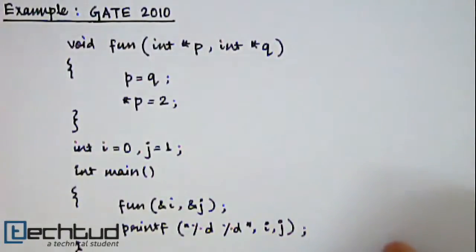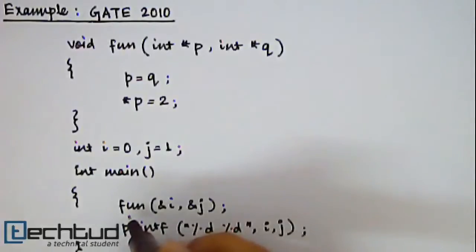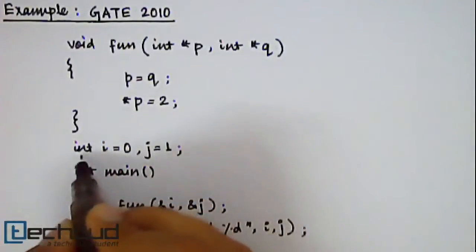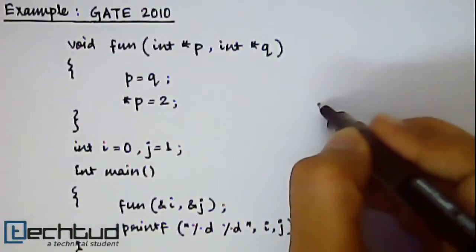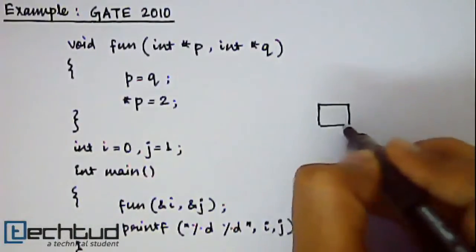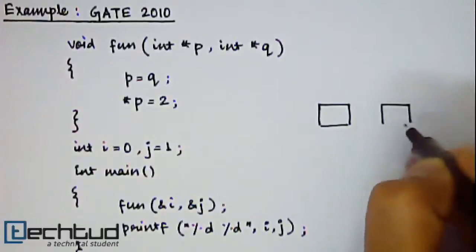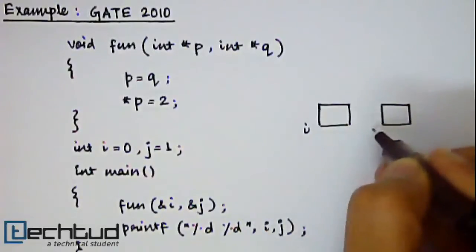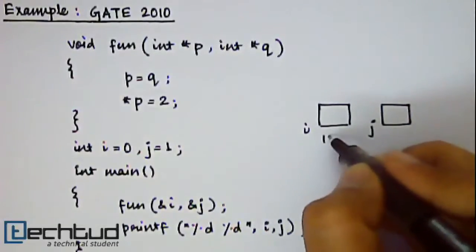So here the program will start executing from the main function, as you know. So what is happening in function fun? We are passing the address of i and j, here i and j are integer variables. So let's draw the memory locations.